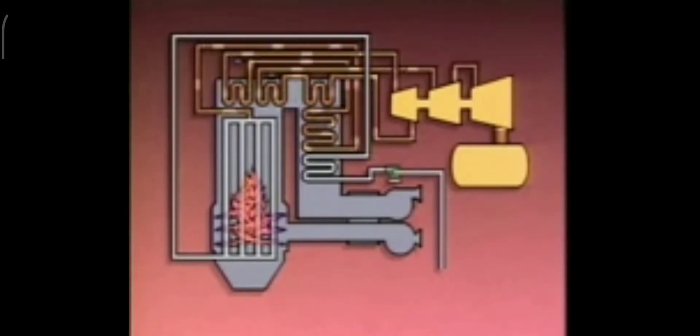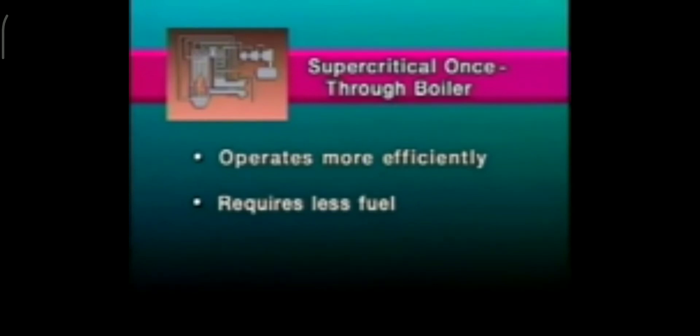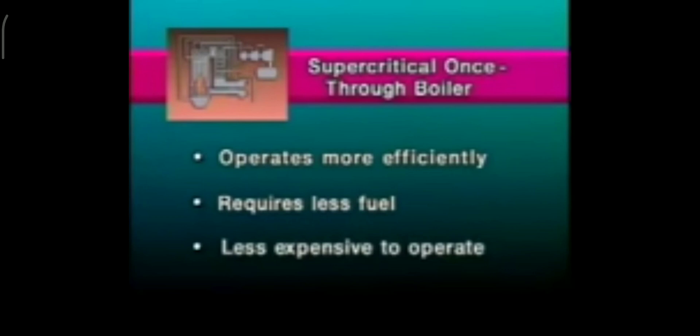The components in the steam flow path are generally the same for supercritical boilers and subcritical boilers. The main advantage of a supercritical once-through boiler is that it operates more efficiently than a subcritical boiler that has to recirculate water in the process of producing steam. A supercritical once-through boiler requires less fuel than a drum-type boiler of the same size to produce the same amount of steam, making it less expensive to operate.